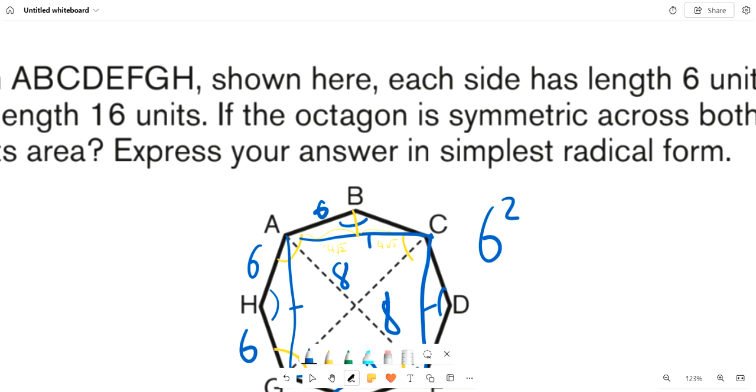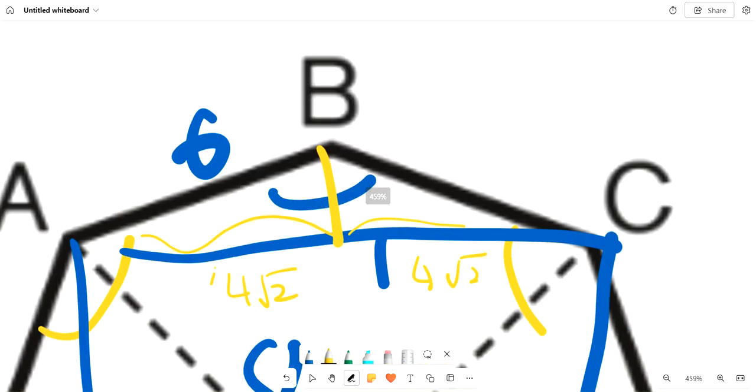6 squared equals 4 root 2 squared plus that height, which we'll call H. So 36 equals 32 plus H squared, and 4 equals H squared. H has to be positive, so H equals 2.